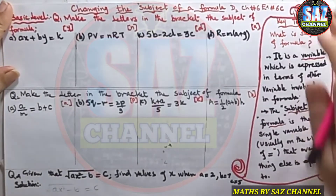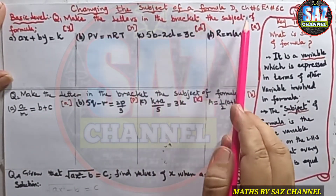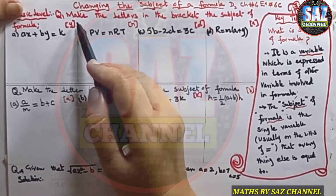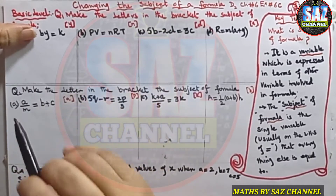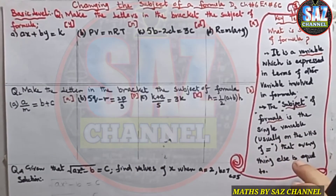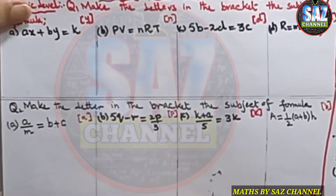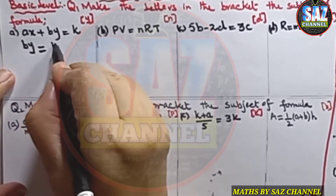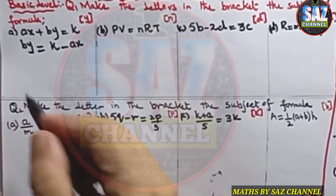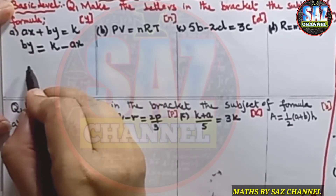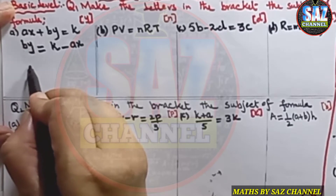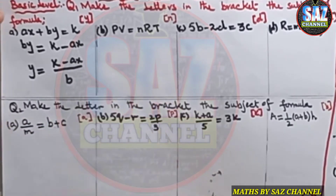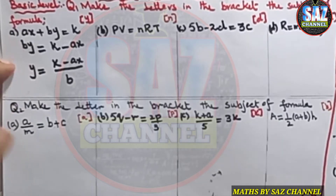In this lesson I will solve Question 1, basic level, which says: make the letters in the bracket the subject of the formula. Part A is ax + by = k, and we need to make y the subject. We keep the 'by' term on the left and shift 'ax' to the other side, giving by = k − ax. Then we divide both sides by b, so y = (k − ax) / b. This makes y the subject of the formula.